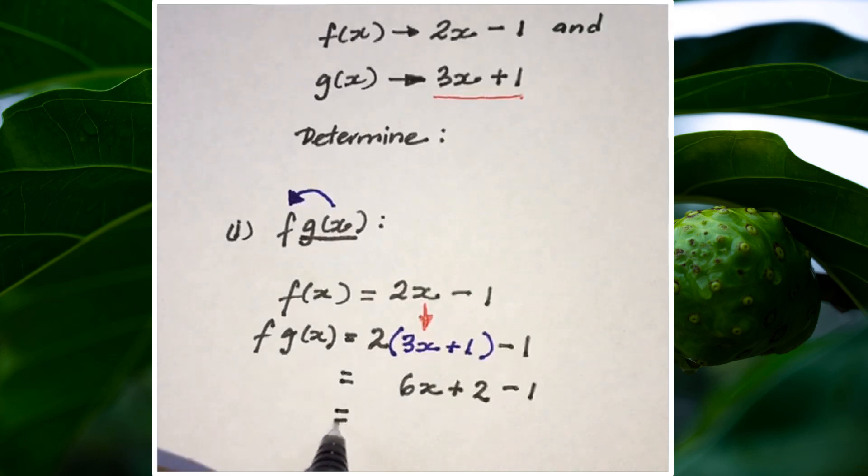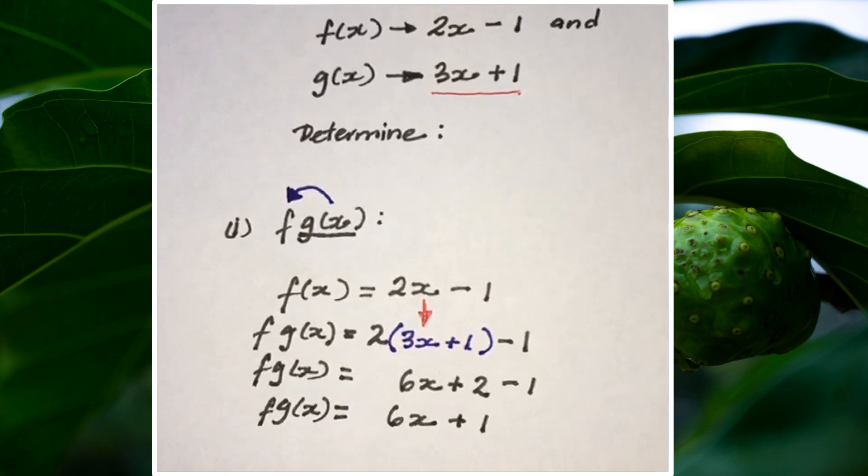There's no like terms to 6x, so we'll leave the 6x. But if I have 2 and take away 1, I'm left with a positive 1. So f(g(x)) will give us 6x + 1.